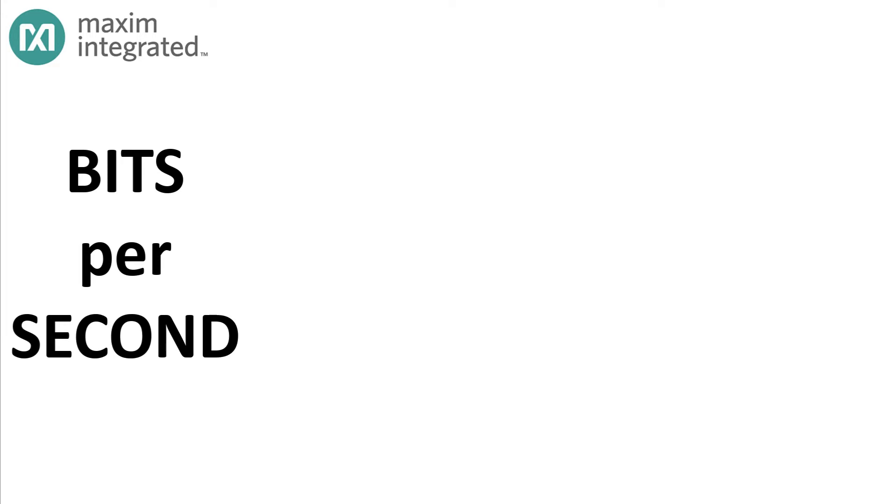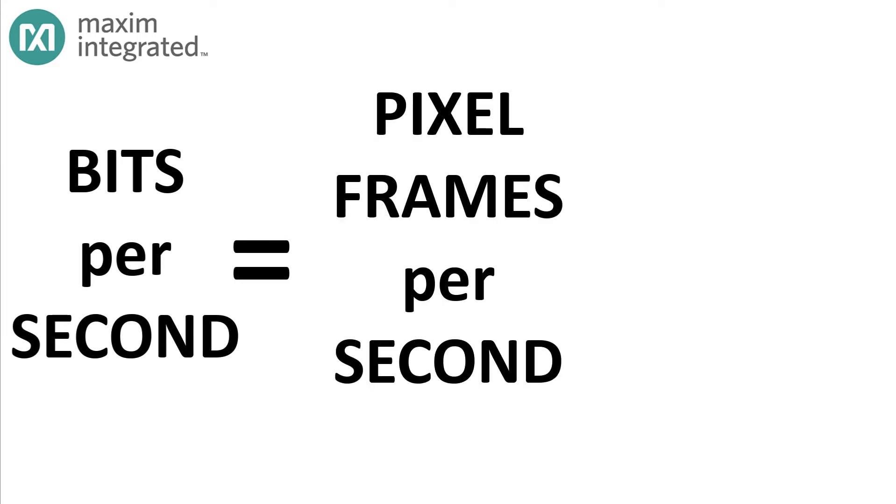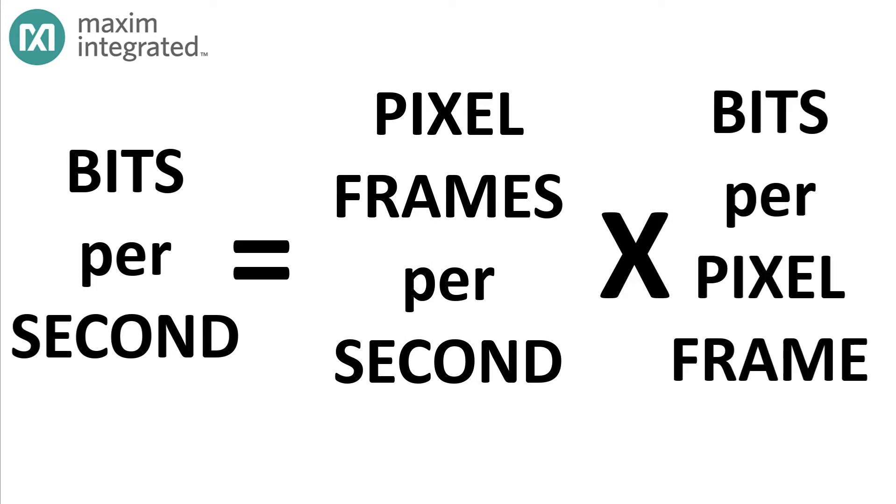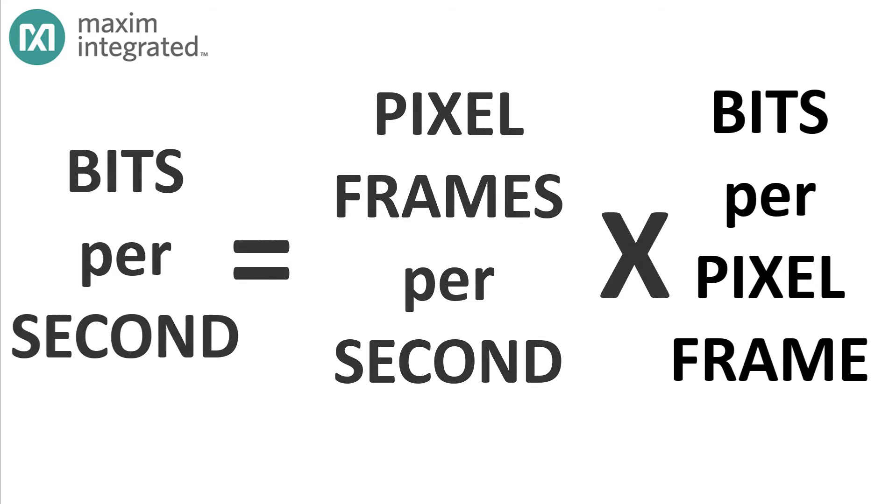It comes down to a simple equation. The number of bits per second on the serial bitstream is equal to the number of pixel frames per second multiplied by the number of bits per pixel frame. It's easy. Let's take each of those factors in turn, starting with the number of bits per pixel.